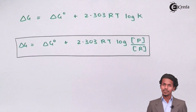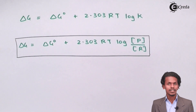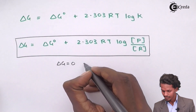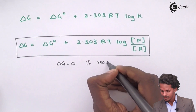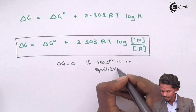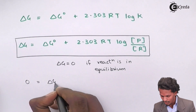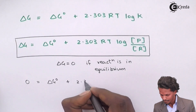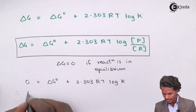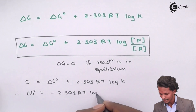There is an important special case: if the reaction is at chemical equilibrium, then delta G equals zero. Substituting delta G equals zero into the equation gives: delta G naught equals minus 2.303 RT log base 10 of K. This is how we represent the relation between the standard Gibbs free energy and the equilibrium constant K.